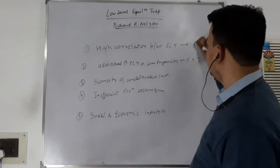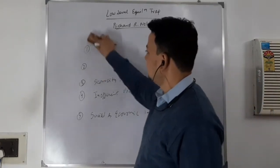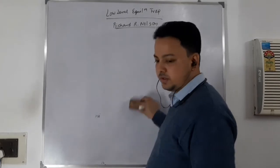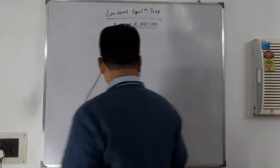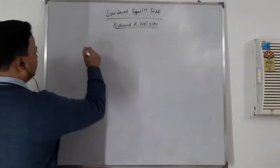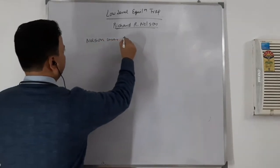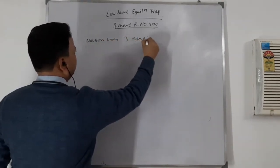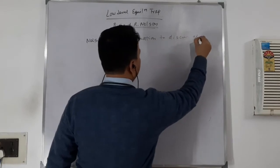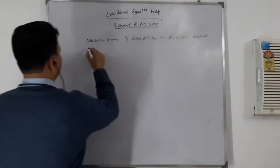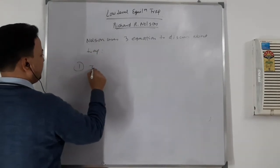Nelson has used three equations to discuss this trap — the Low-Level Equilibrium Trap. First is the income determination equation. Income depends on capital stock.